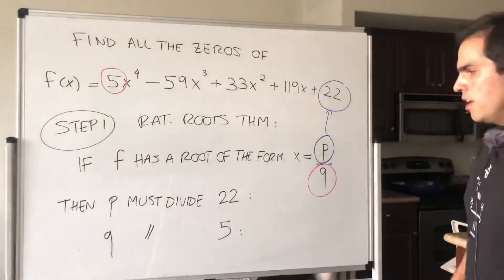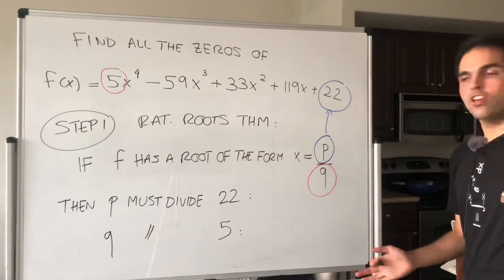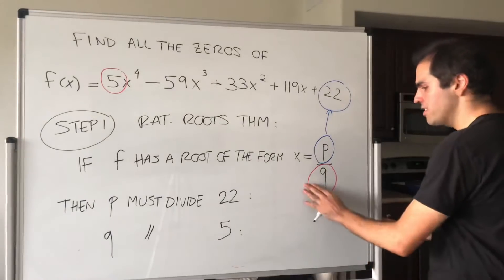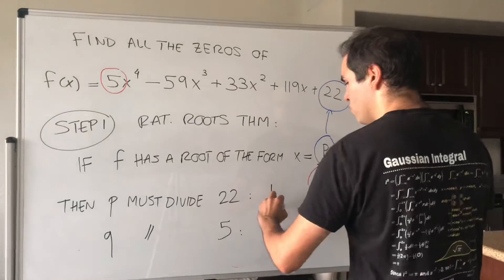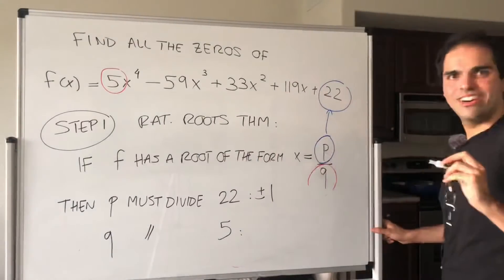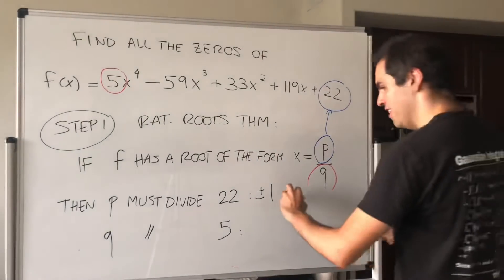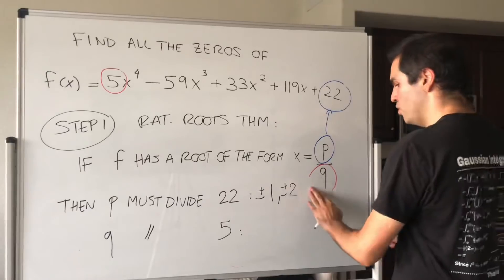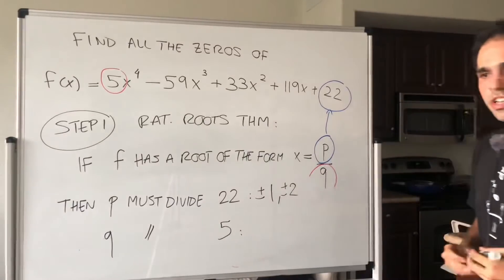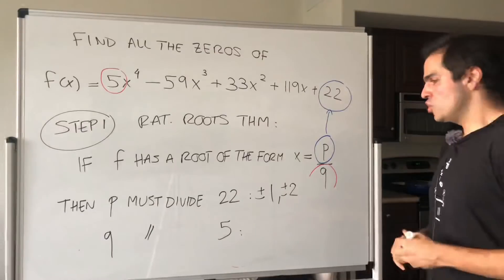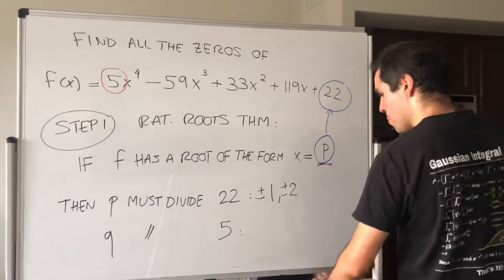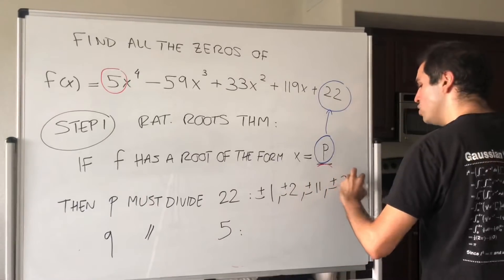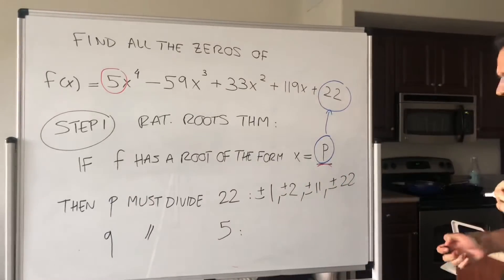There are not that many numbers that divide 22: 1 divides 22, but also minus 1. 2 divides 22, but also minus 2. Now 22 is 2 times 11, so 11 divides 22, but also minus 11. And lastly, 22 divides 22.